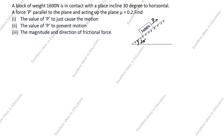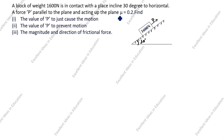Welcome to my channel 'Excellent Ideas in Education'. Today we are going to solve this engineering dynamics problem. A block of weight 1600 Newton is in contact with a plane inclined 30 degrees to the horizontal. A force P is parallel to the plane, and the coefficient of friction mu is equal to 0.2.